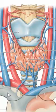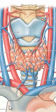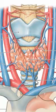Outline of clavicle. Outline of the sternum. Inferior thyroid veins. Inferior thyroid artery.